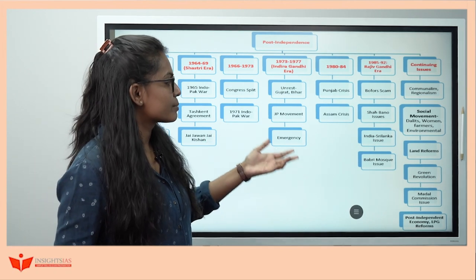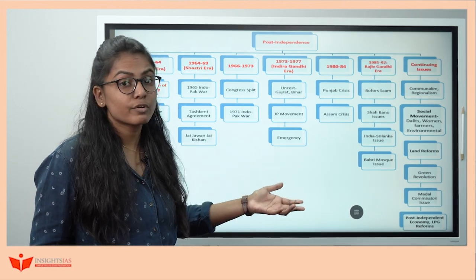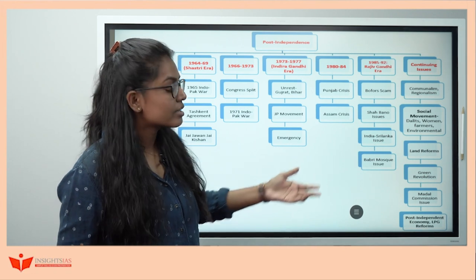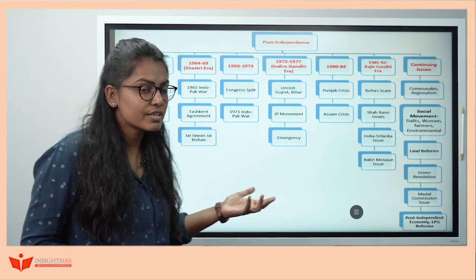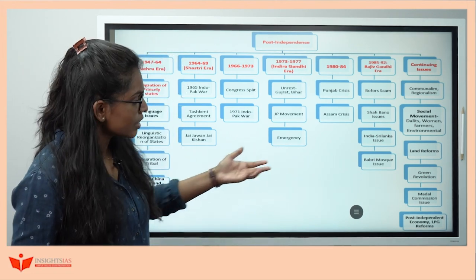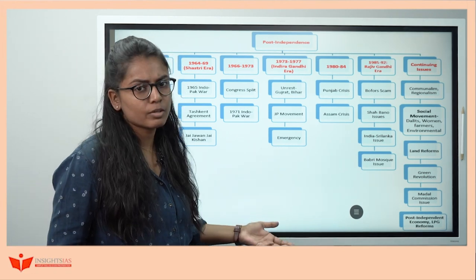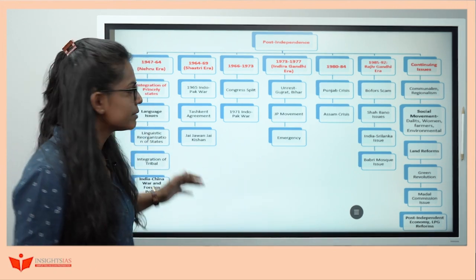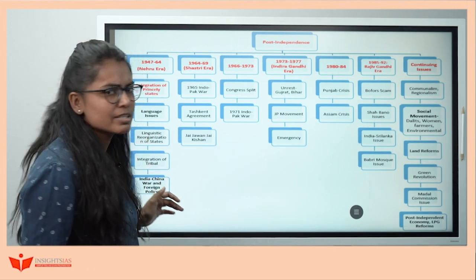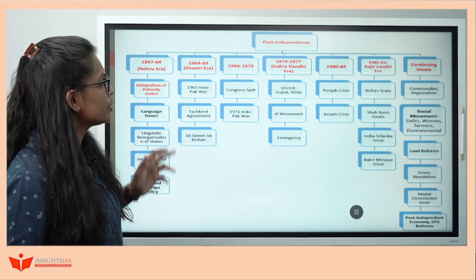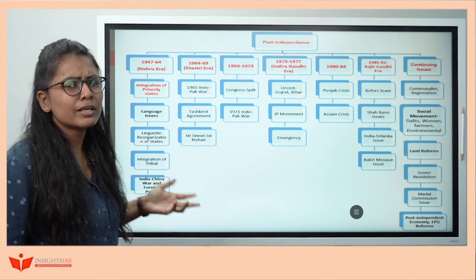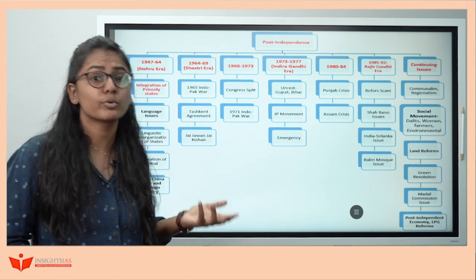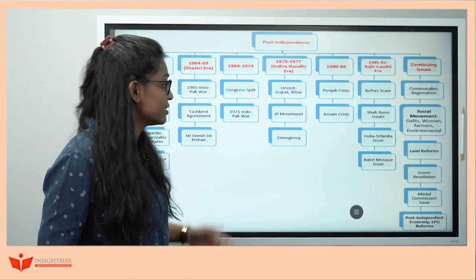Continuing issues also include land reforms, the Green Revolution, nutritional insecurity, the Mandal Commission issue, reservations, post-independent economy, and LPG reforms. So see how I've divided them into small, small syllabus. What you need to do is prepare 250 to 300 words of content under each, and your post-independence preparation is ready. The same thing we'll do for world history — I'll show it in the next video.